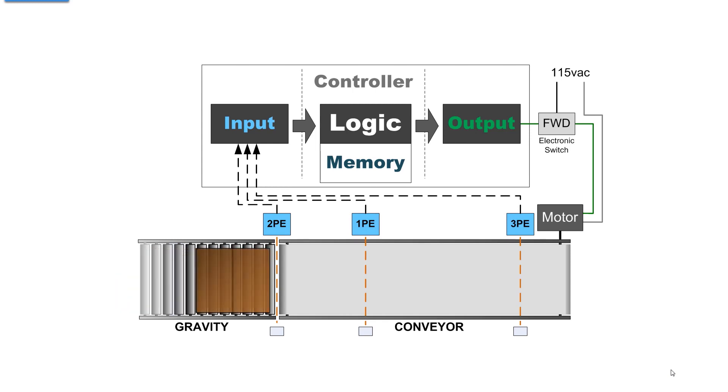If we have a carton come down the gravity feed conveyor, 2PE—photo eye 2—tells the controller, tells the logic against whatever's in memory, that there is a carton available to come onto the conveyor. At that point, the conveyor can then pull the carton onto the conveyor until it blocks 1PE, photo eye 1, and then it stops.